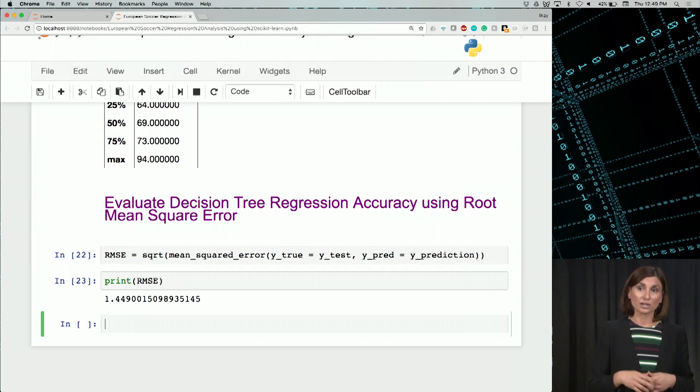So that ensures our evaluation was on a data set that the model hasn't seen. And we saw that linear regression model performed a little worse than the decision tree-based regressor.